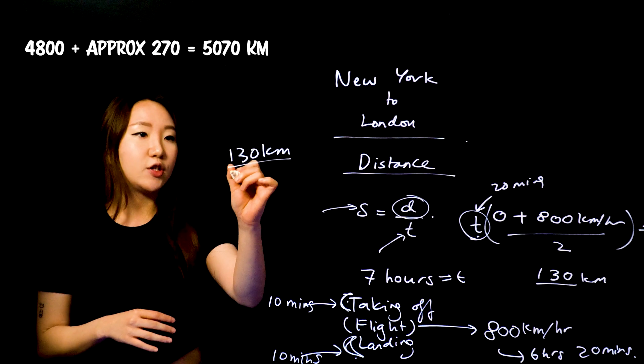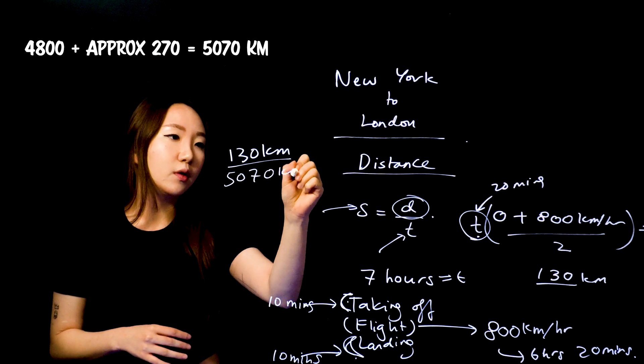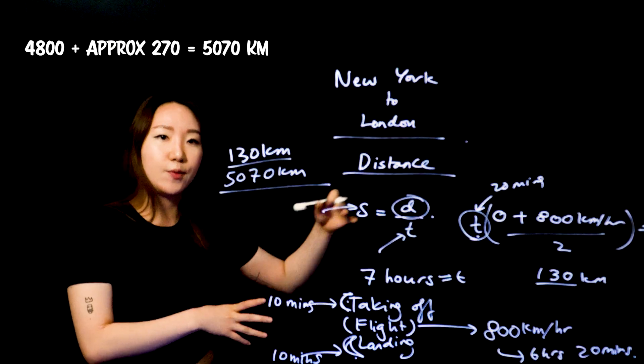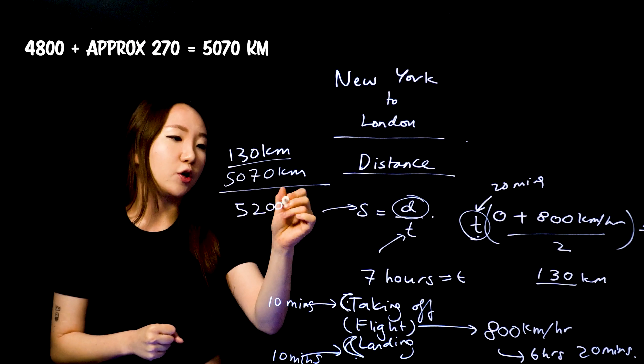And then finally, I'll just add that on to the takeoff and landing time I found before. And so my final estimate for how long the distance is from New York to London for me is going to be 5,200 kilometers.